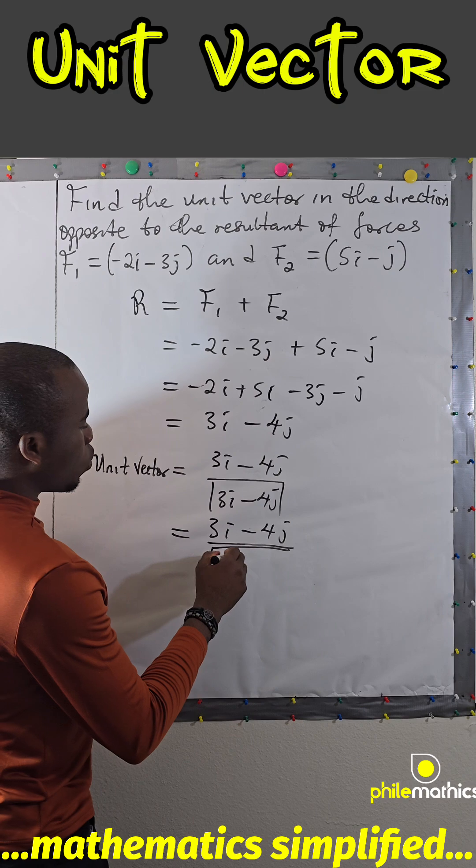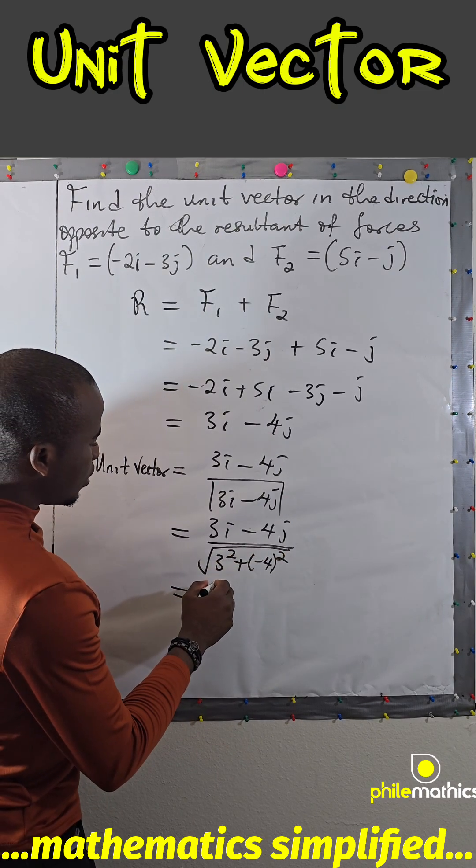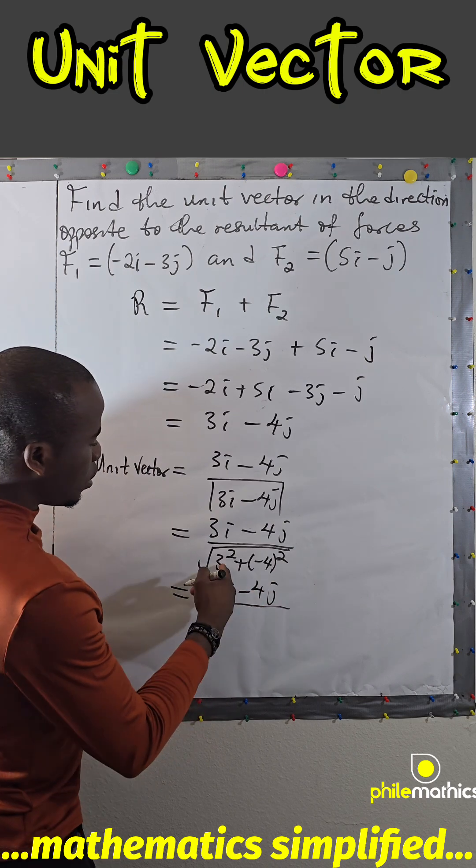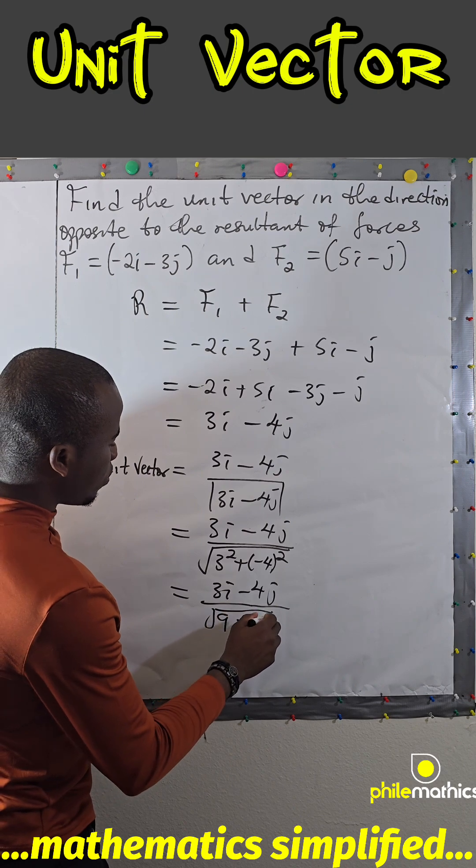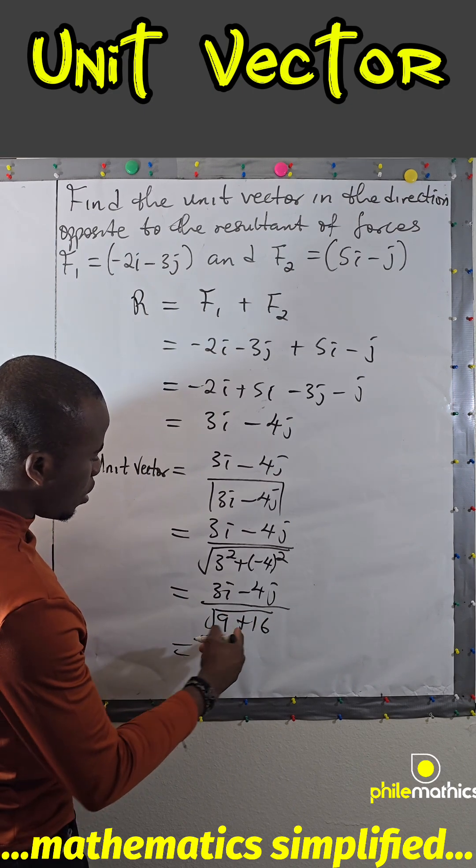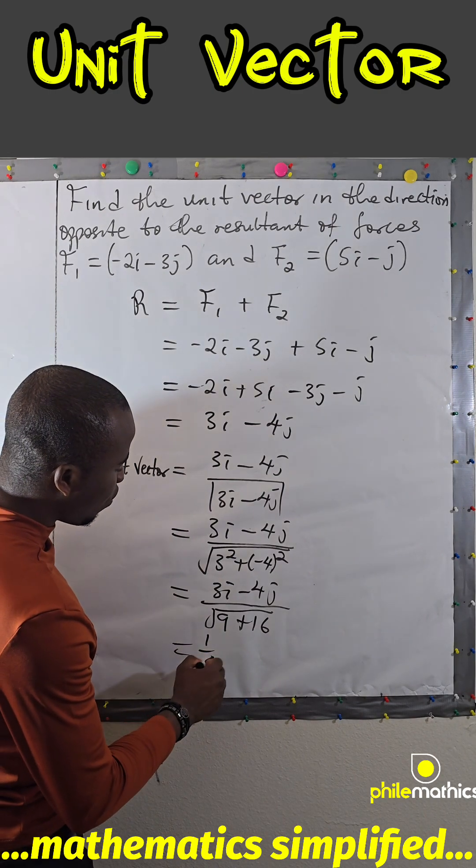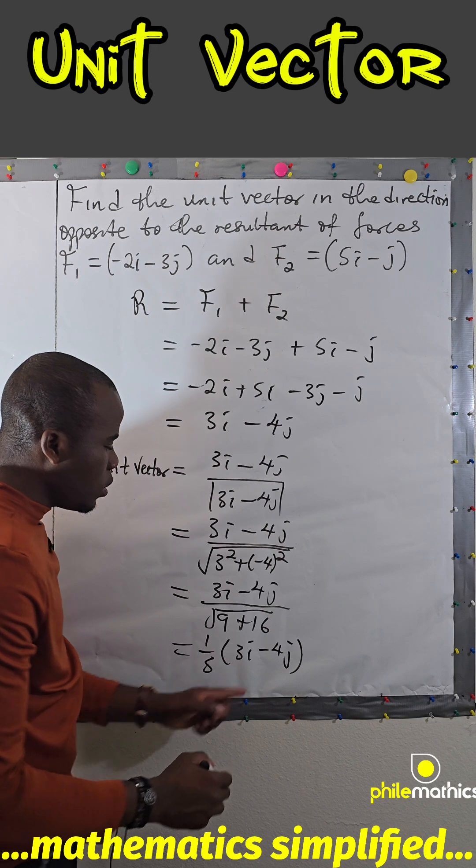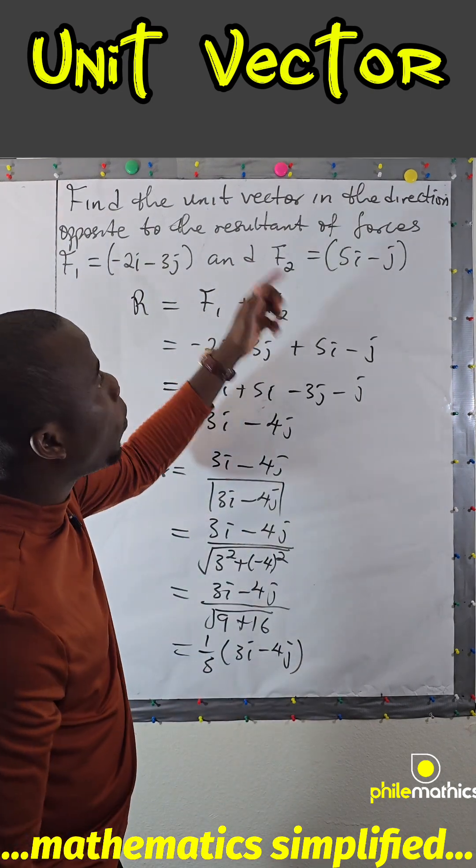And so this is 3i - 4j over, 3 squared is 9 and -4 squared is 16, so this is 25. Square root of 25 is 5, so this is 1/5(3i - 4j). So this is the unit vector that is in the direction opposite to the resultant of forces.